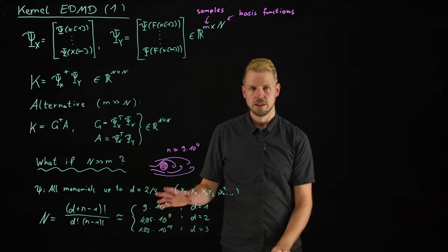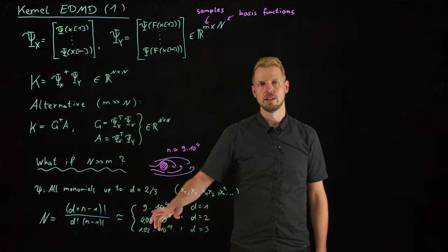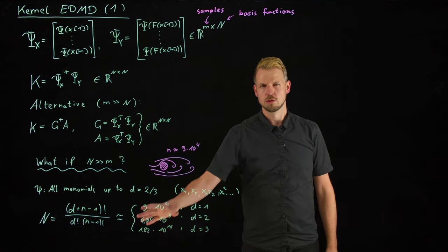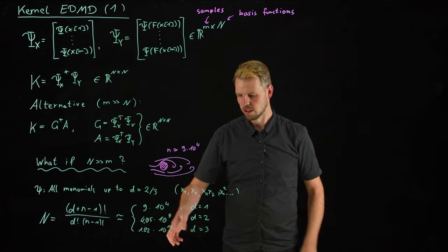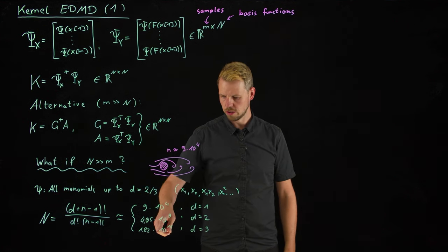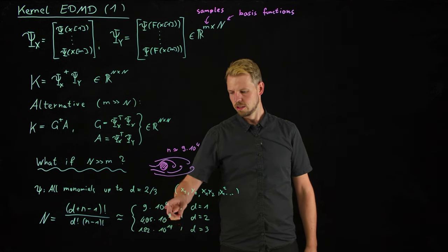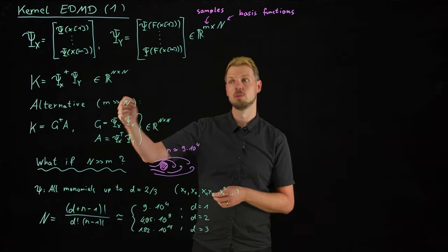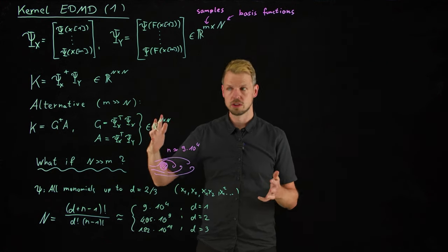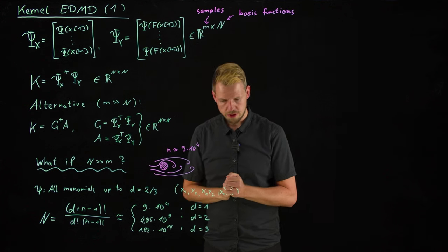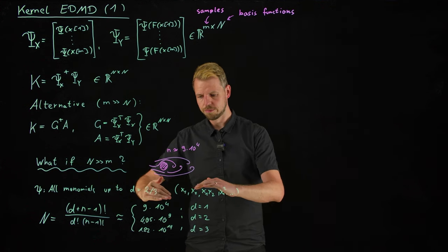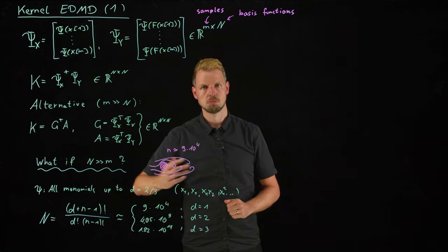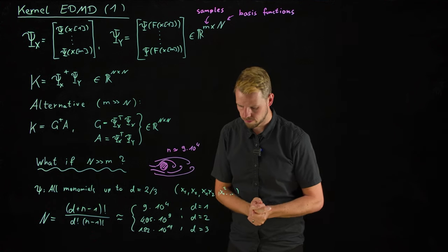And so you see, this grows incredibly quickly. And this is one facet of what's known as the curse of dimensionality, right? So simply setting up such a dictionary would immediately ruin our computational resources. You see this n by n matrix can never be computed, cannot even be stored. The inverse computations become infeasible, which means that we are limited to small dictionaries.